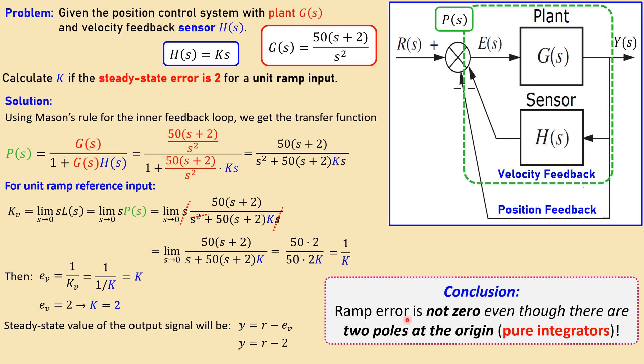So the ramp error must be 0 for type 2 system, but in total here this system is not a type 2 but a type 1 system. That's why actually what we have here still some error that will be also the case for the ramp input.